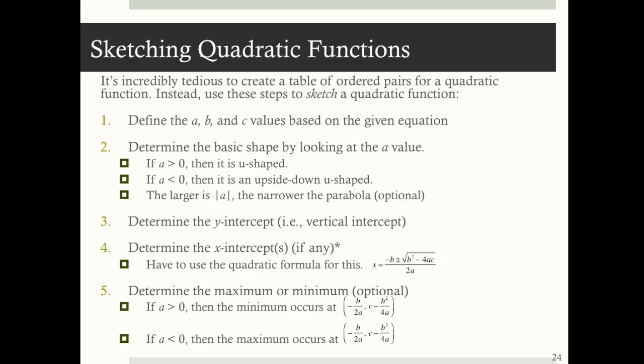If you want, you can also determine the maximum or minimum. When a is greater than 0, the shape of the parabola is a u, so the minimum occurs at the ordered pair negative b over 2a, c minus b squared over 4a. And if a is less than 0 so that the parabola looks like an upside-down u, there's a maximum, and the ordered pair is the same: negative b over 2a, c minus b squared over 4a. Whether it's a maximum or minimum just depends on the value of a.